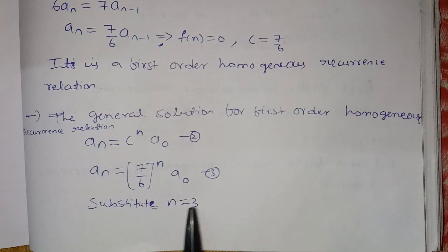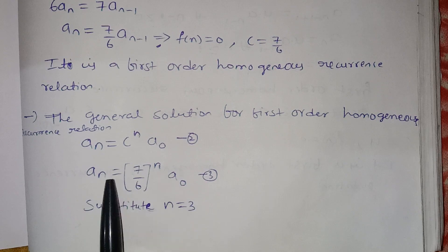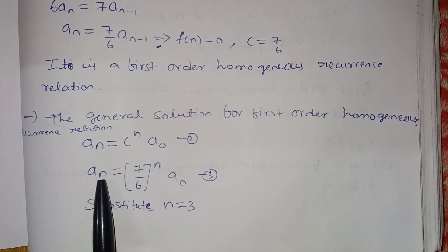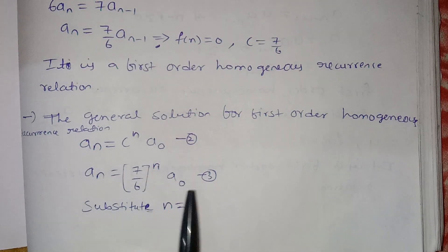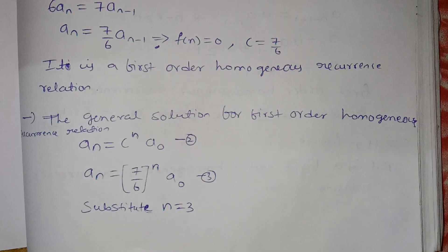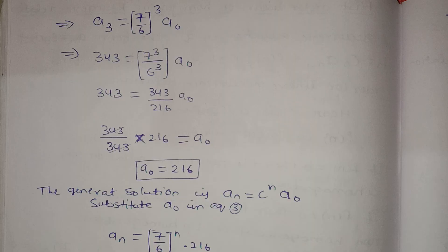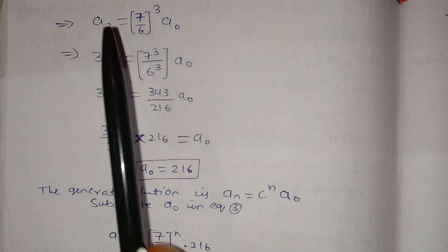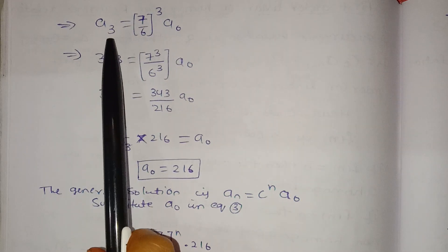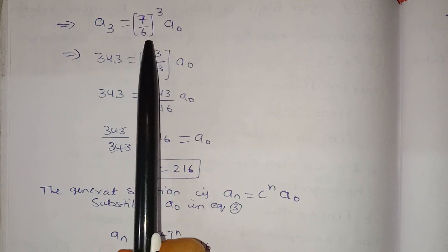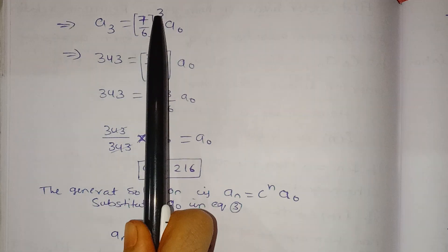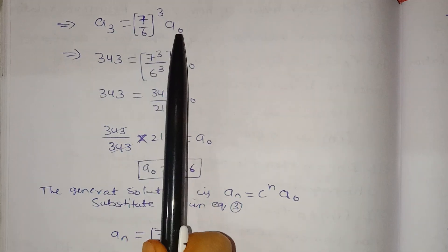We substitute into the formula. A₃ = (7/6)³ · a₀. Here A₃ is equal to (7/6) whole power 3 times a₀.